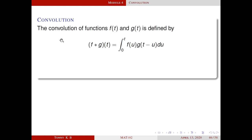The convolution of two functions f and g is defined by the integral from 0 to t of f and g, and it is denoted by f star g. Here the limits of this integration are 0 and t, therefore this integral is a function of t. So f star g is a function of t.